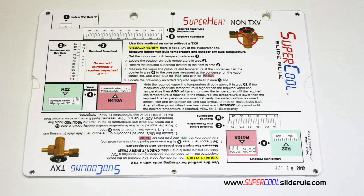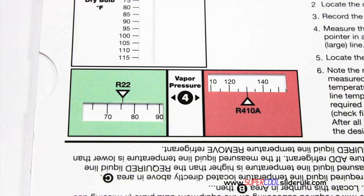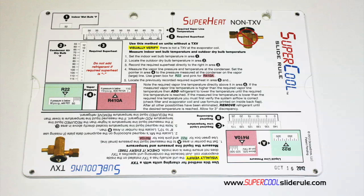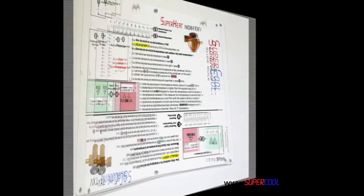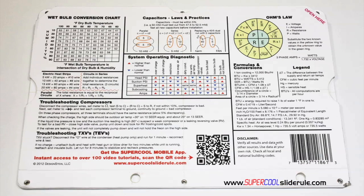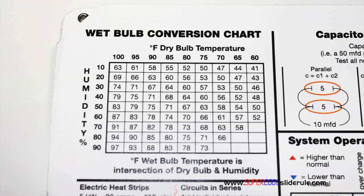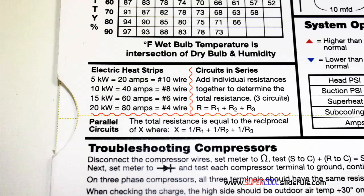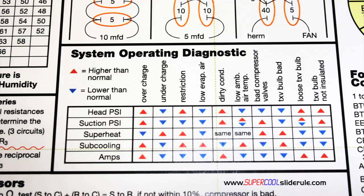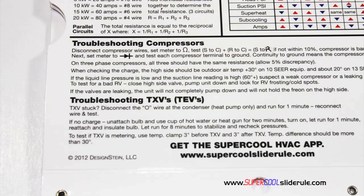This one tool will allow you to charge a system with R22 or R410A in either the superheat or subcooling method. The back cover contains required formulas. It has capacitor rules and practices, a wet bulb conversion chart, how to perform computations on series or parallel circuits, an electric heat strip guide, a complete system troubleshooting diagnostic chart, and how to troubleshoot compressors and TXV.